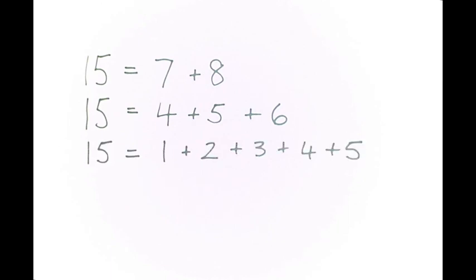Fifteen I can also make by adding these five consecutive numbers together. One and two and three and four and five. One plus two is three, three plus three is six, six plus four is ten, ten plus five is fifteen.